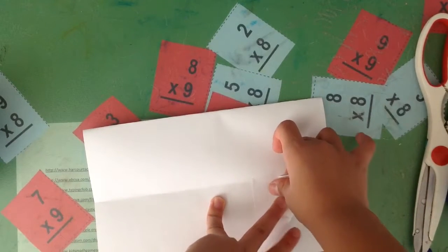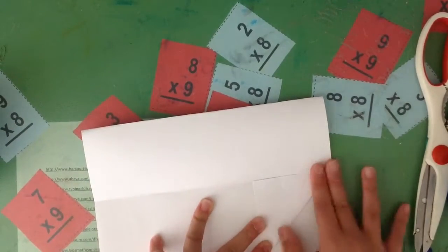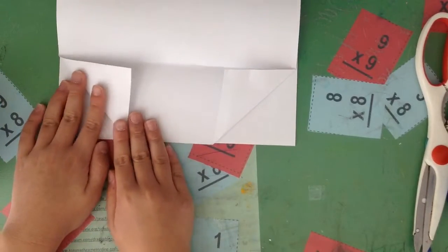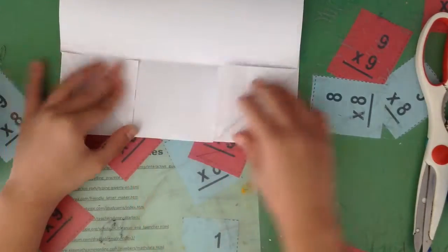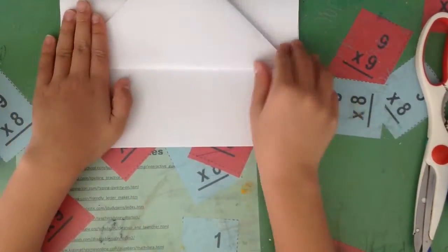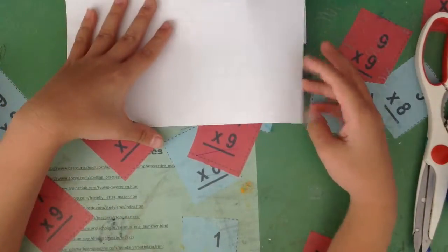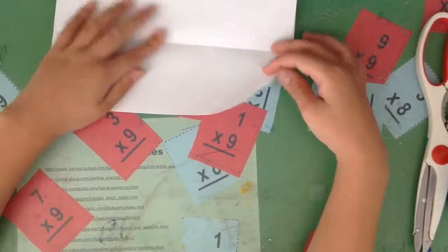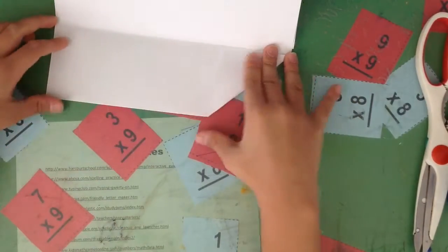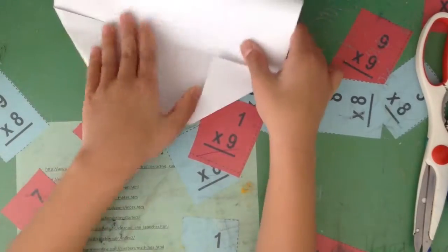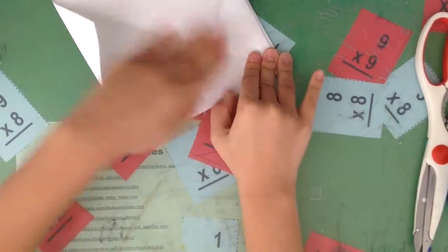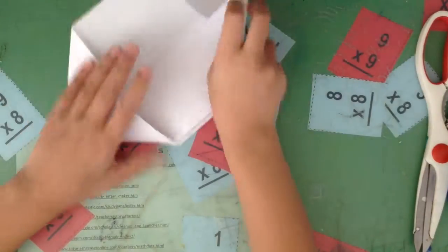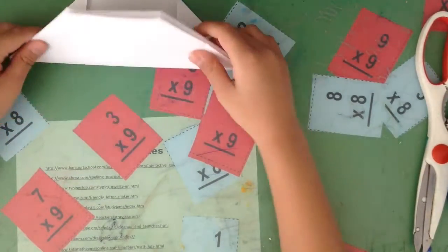Now, you're going to fold these up to the crease you just made. So you're going to fold it up and flip it over. Then you're going to fold this up and then unfold. And do the same exact thing that you just did. But instead, this time, you're also going to fold these here too.